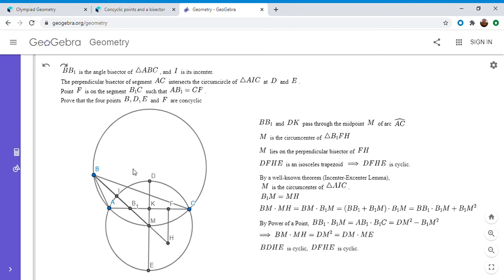So we know that BDHE is cyclic. And then, like I mentioned before, DFHE is cyclic because it's an isosceles trapezoid. And so then all five of those points have to lie in a circle. And that solves the problem because that means BDEF is cyclic.